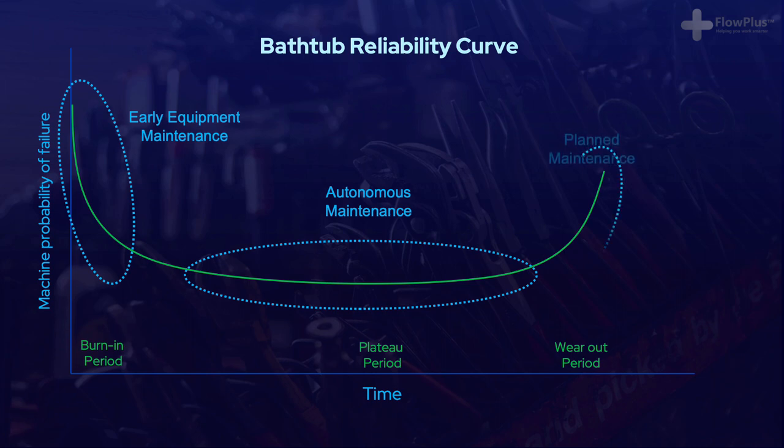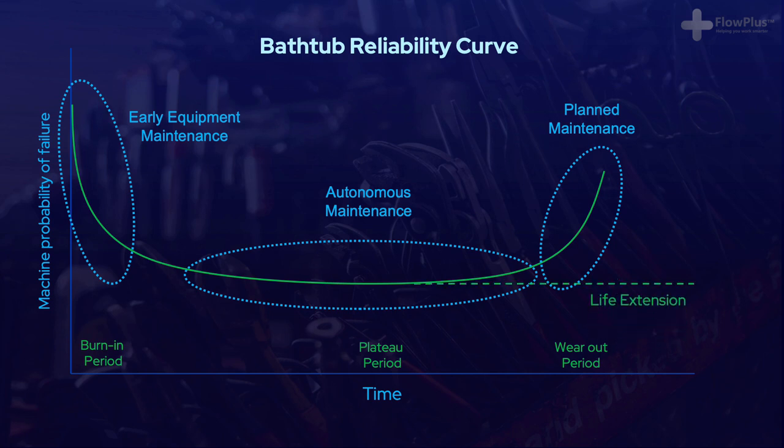During the plateau period, the failure probability is reduced through autonomous maintenance. The wear-out stage is finally managed through predicted and planned maintenance, thereby minimising unexpected disruptions and extending the life of the machinery.